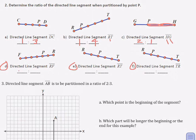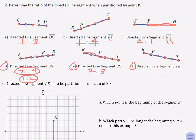The ratio here would be two to four, which you can reduce to one to two — either one is correct. For E, the directed line segment is called RT. R gets two while T gets three, so the ratio would be two to three. And for the last one, T is getting four while R is getting one. The order of the letters matters, and the order of the letters follows the order of the directed line segment.